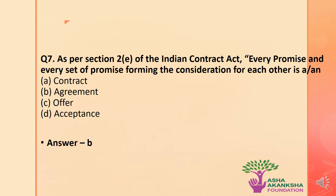The next question is: as per Section 2, clause (e) of the Indian Contract Act, every promise and set of promises forming the consideration for each other is which of the following? Options are: A) Contract, B) Agreement, C) Offer, or D) Acceptance. The correct answer is option B — every promise and every set of promises forming the consideration for each other is an agreement, as stated in Section 2, clause (e) of the Indian Contract Act.